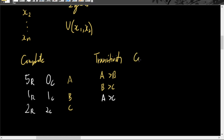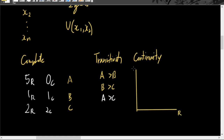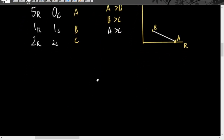The third assumption is continuity — the preference of the consumer is continuous. Making a graph with quantity of rice on one axis and quantity of chicken on the other: if bundle A is at one point and bundle B is at another, the consumer would always prefer any point along the line closer to bundle A over bundle B, since the consumer prefers bundle A over bundle B.